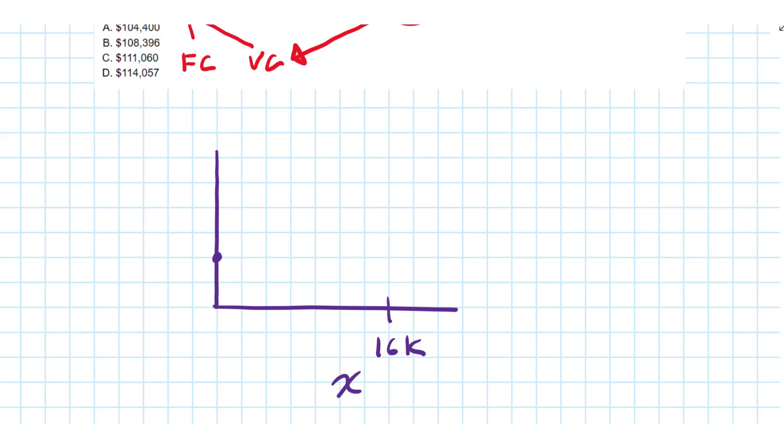That's the x-axis for units, the y-axis for the total cost. The graphical solution would look like this: fixed cost plus 16,000 times the variable cost. That would be the gradient here.